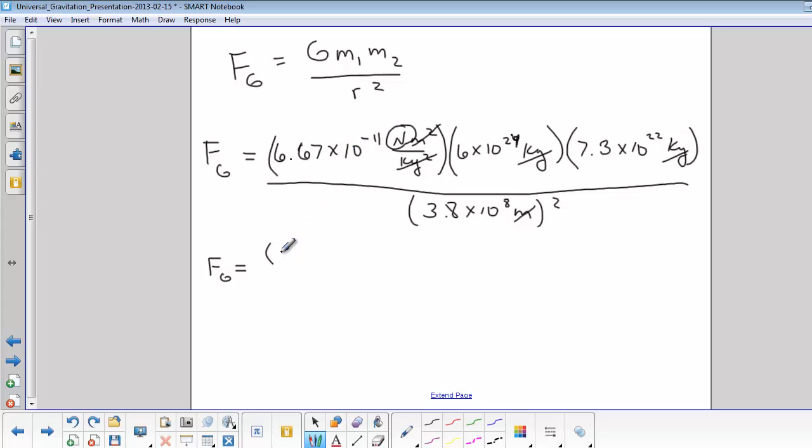So let's just write our coefficients 6.67 and then we have 6 and then 7.3 and in the denominator we have 3.8 squared.